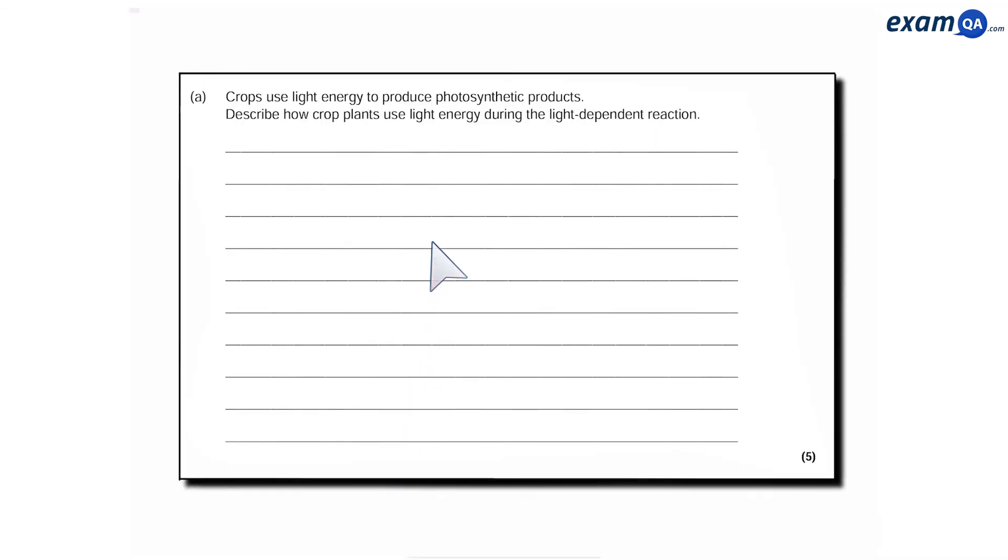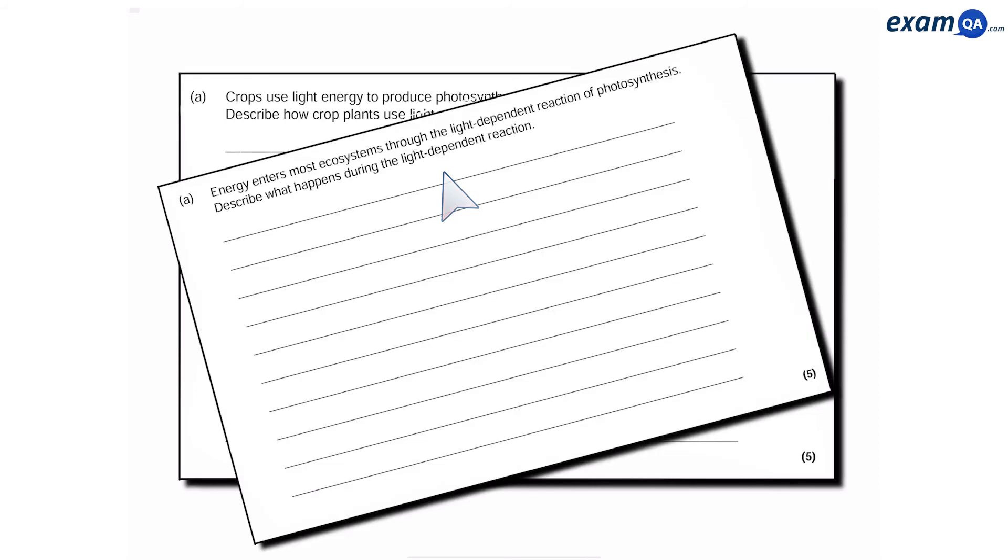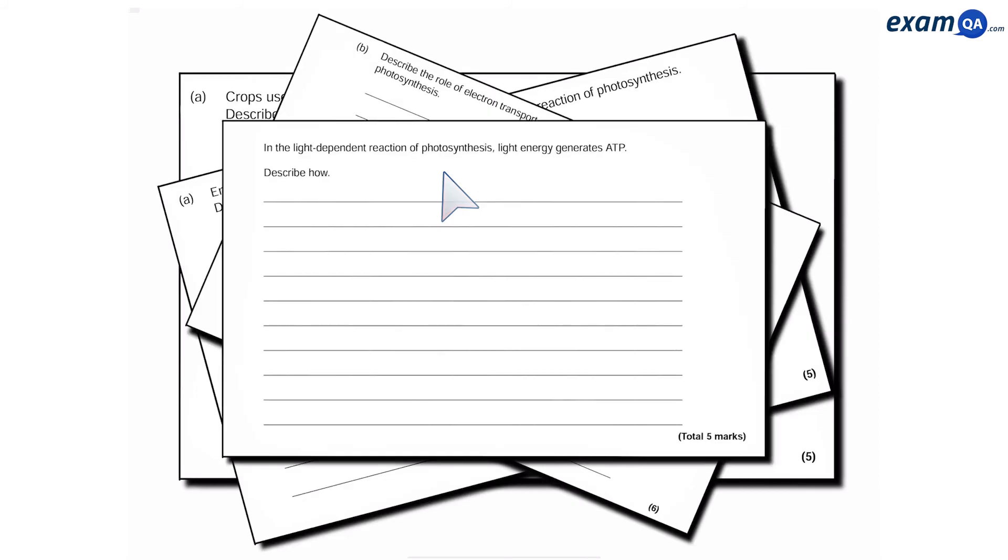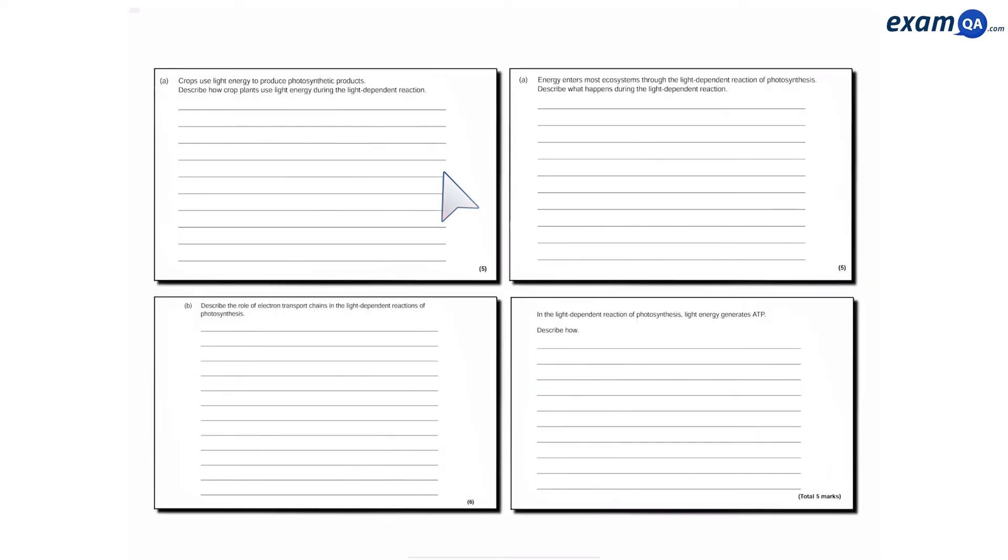Okay, so we've spoken about the light-dependent stage. But what about if we have questions like this, this, this one, or even this? Notice they're all big 5 or 6 mark questions. But what's common is that all of these questions are essentially asking the same thing: Describe the light-dependent process.